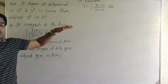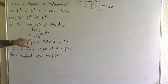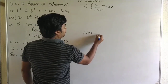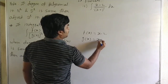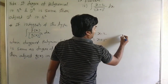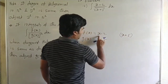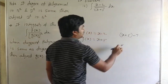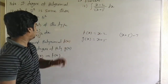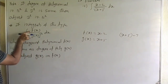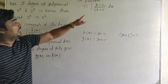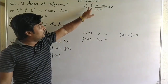Here the integral is of the type f(x) upon g(x)^n, where f(x) = x minus 2 and g(x) = x plus 5. The degree of f(x) and g(x) is the same, so we adjust g(x) in f(x). We want to express x minus 2 in terms of (x plus 5): from (x plus 5) we subtract 7 to get x minus 2, so the adjustment gives minus 7. The power n here is 1/2 (square root); it could be 1/3 for cube root, or any other power.